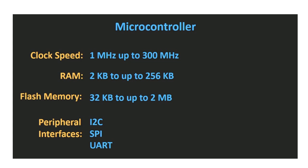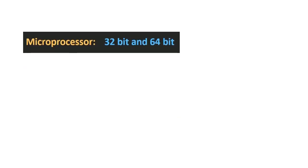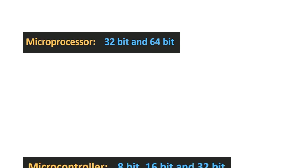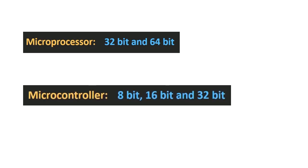Modern day microprocessors are either 32-bit or 64-bit. A 32-bit microprocessor can handle 32 bits of binary data at the same time, while a 64-bit microprocessor can handle 64 bits, with all address and data buses sized accordingly. Modern day microcontrollers are either 8-bit, 16-bit, or 32-bit. So the amount of data a microprocessor can handle in a single cycle is higher than that of microcontrollers.